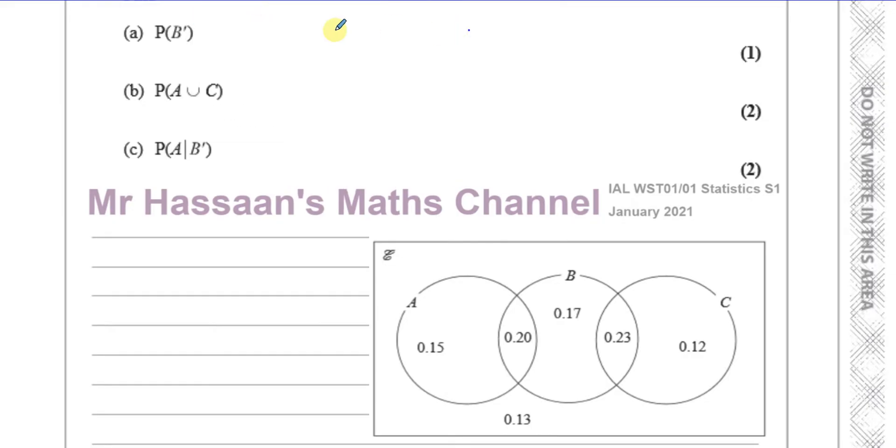So the probability of B complement basically is the probability of everything occurring which is outside of the circle of B. So we have to add together these probabilities, which is 0.15 plus 0.13, that's 0.28, plus 0.12. So that's going to be 0.4. If you add them together, you're going to get 0.28 plus 0.12, gives you 0.40, which is 0.4.